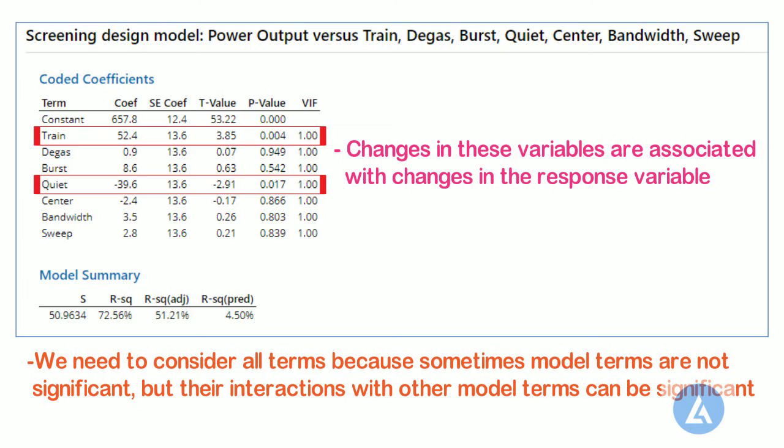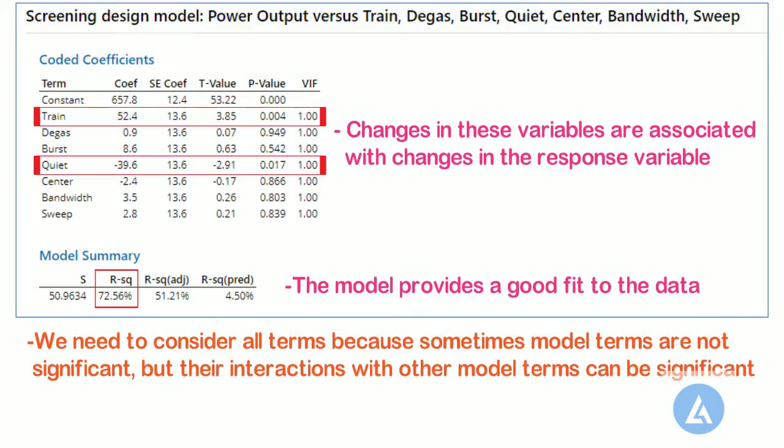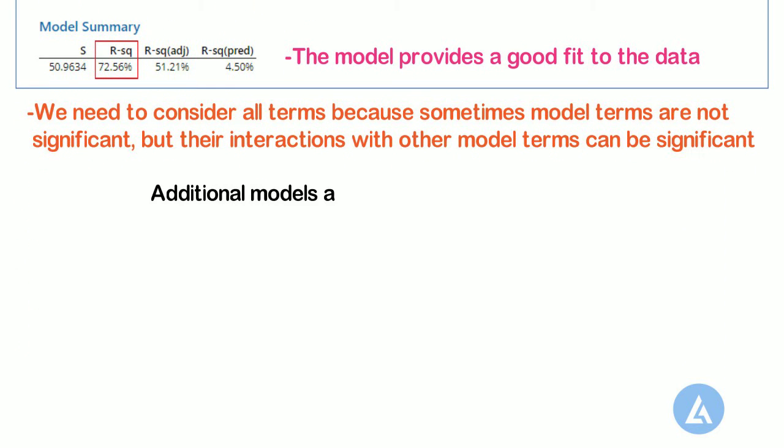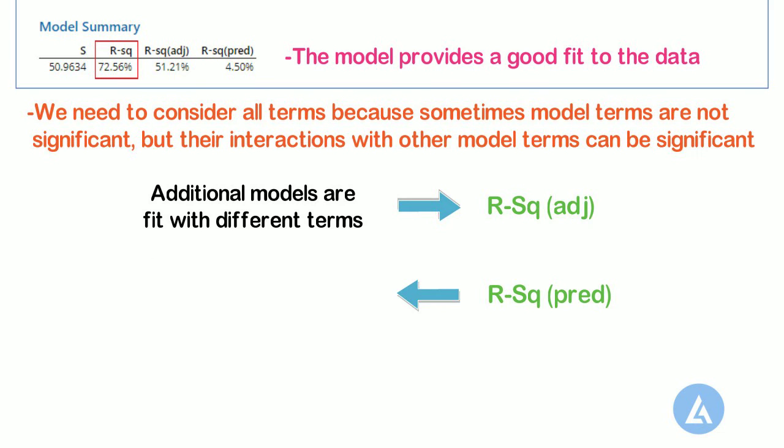In these results, the model explains 72.56% of the variation. For these data, the R-square value indicates that the model provides a good fit to the data. If additional models are fit with different terms, then use the adjusted R-square values and the predicted R-square values to compare how well the models fit the data.